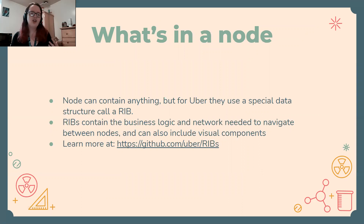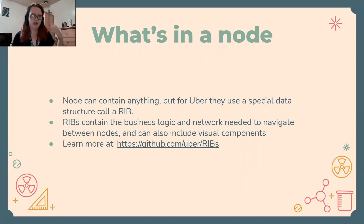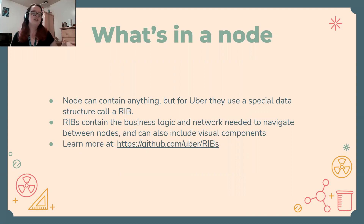So what is a node exactly? A node can contain any type of data structure, but specifically with Uber and state management, there's a data structure called a rib. A rib contains the business logic and network needed to navigate between nodes, and this can also include visual components — so it contains how to go from one node to another, what actions you need to take, and they can also contain the UI, menus, etc. There's a GitHub page — it's open source, so you can definitely look more into that if you're interested.